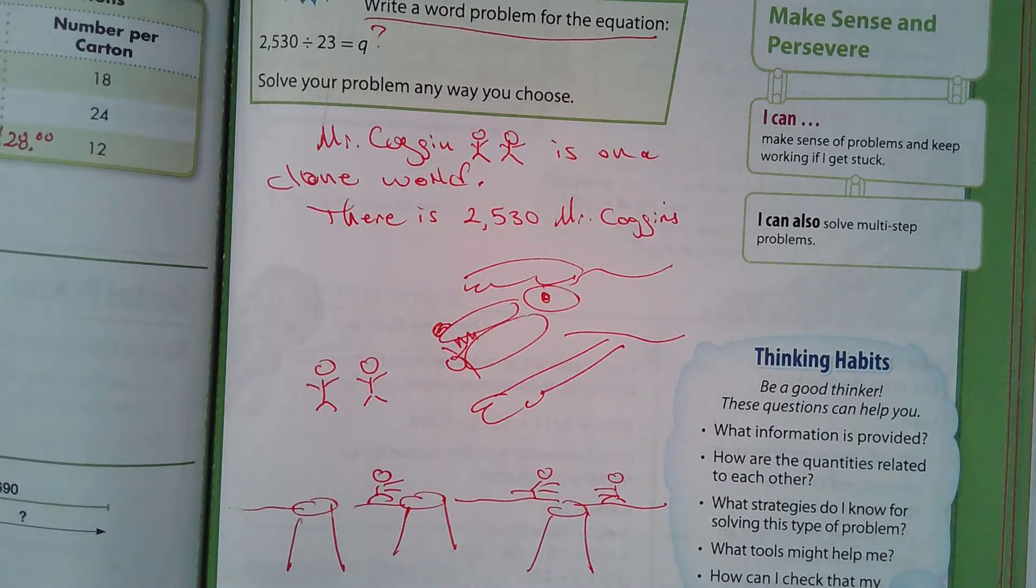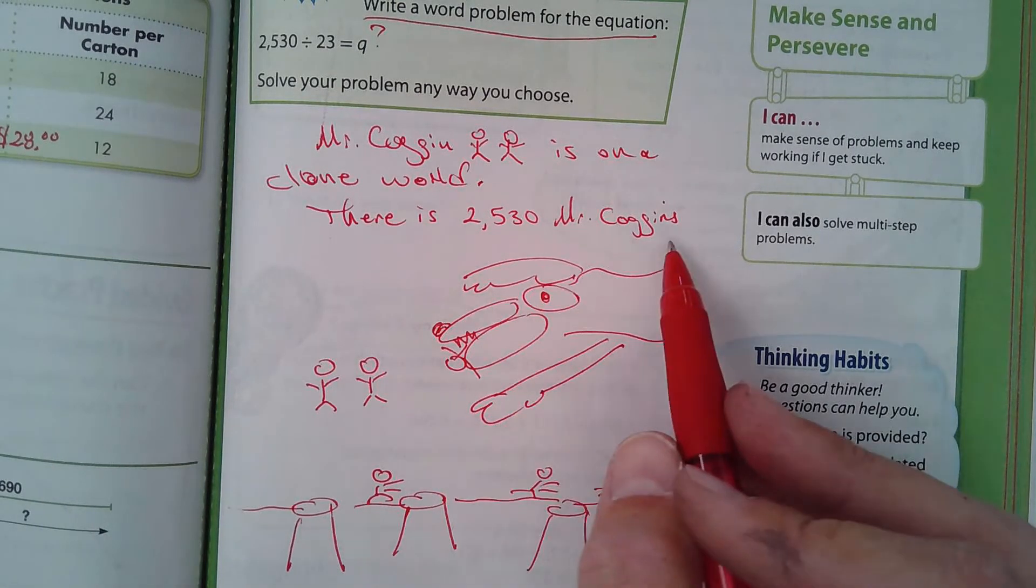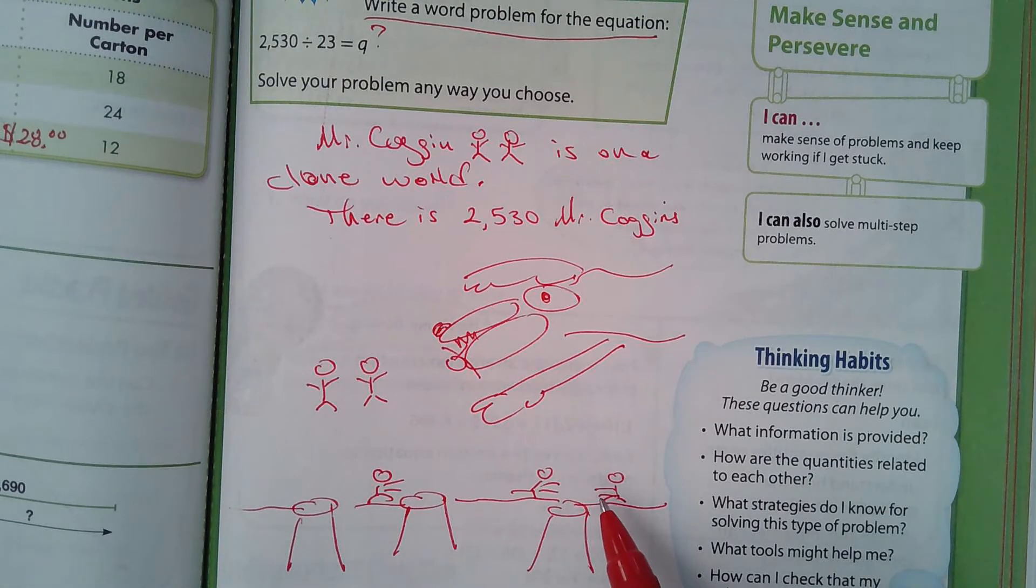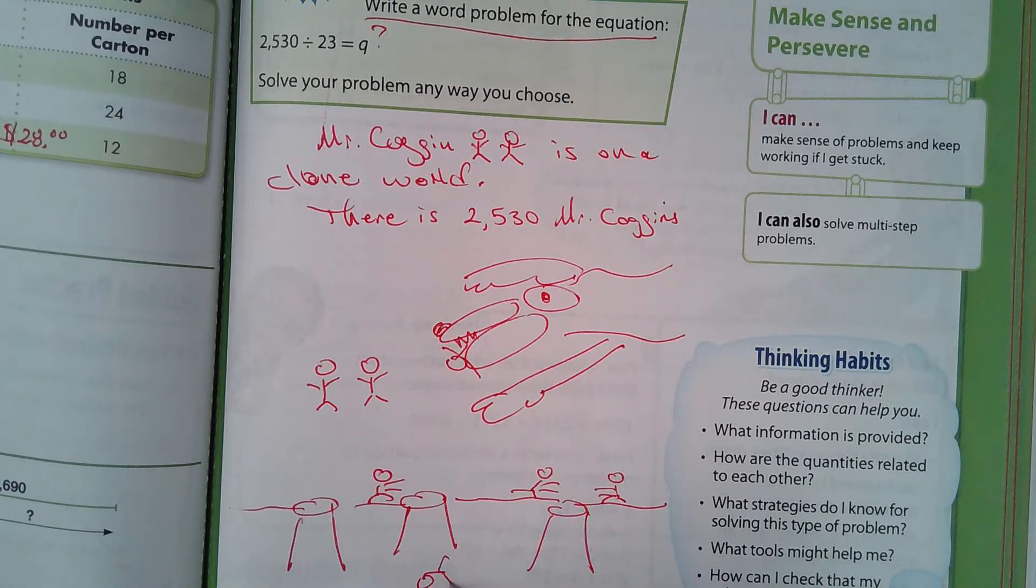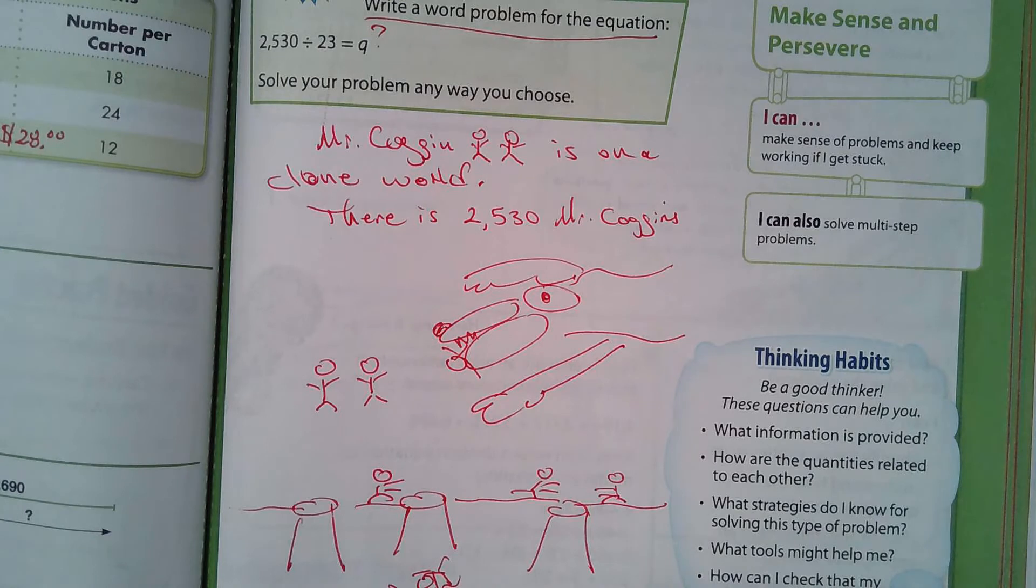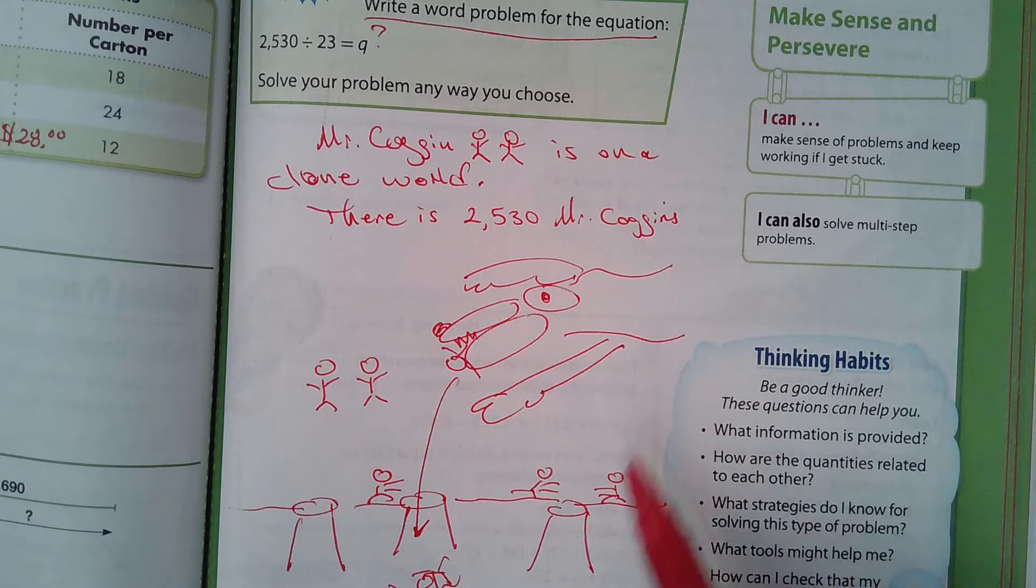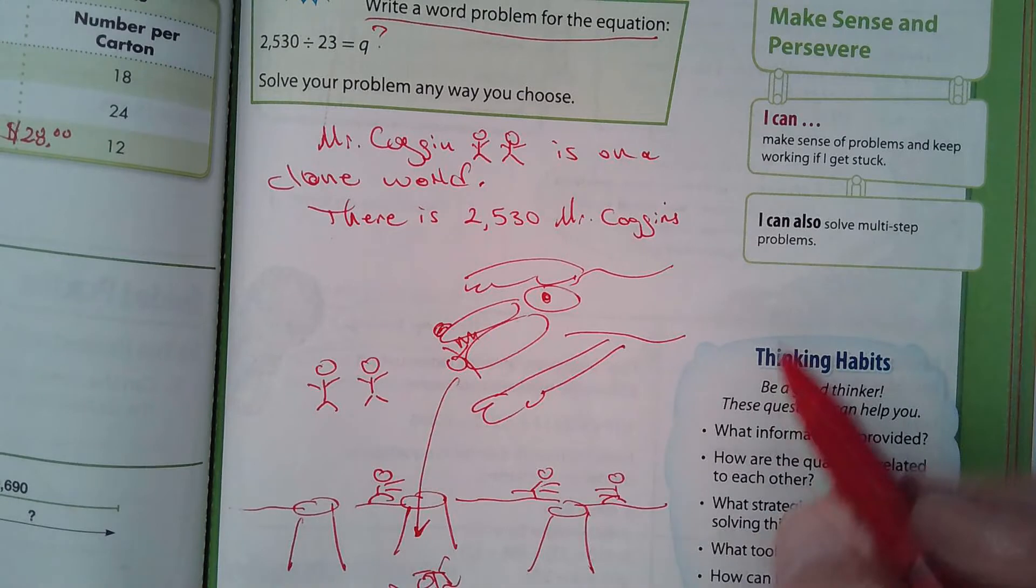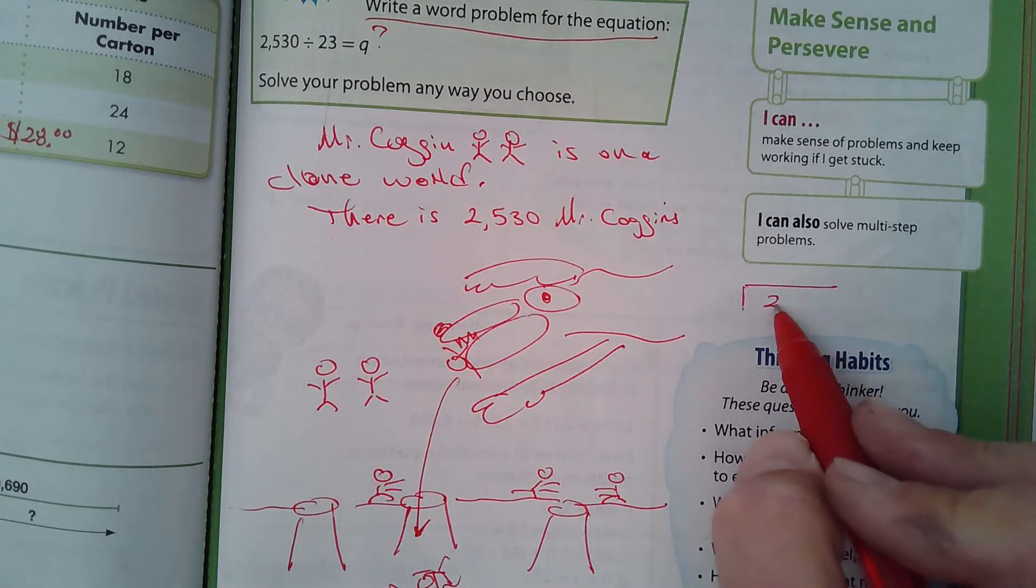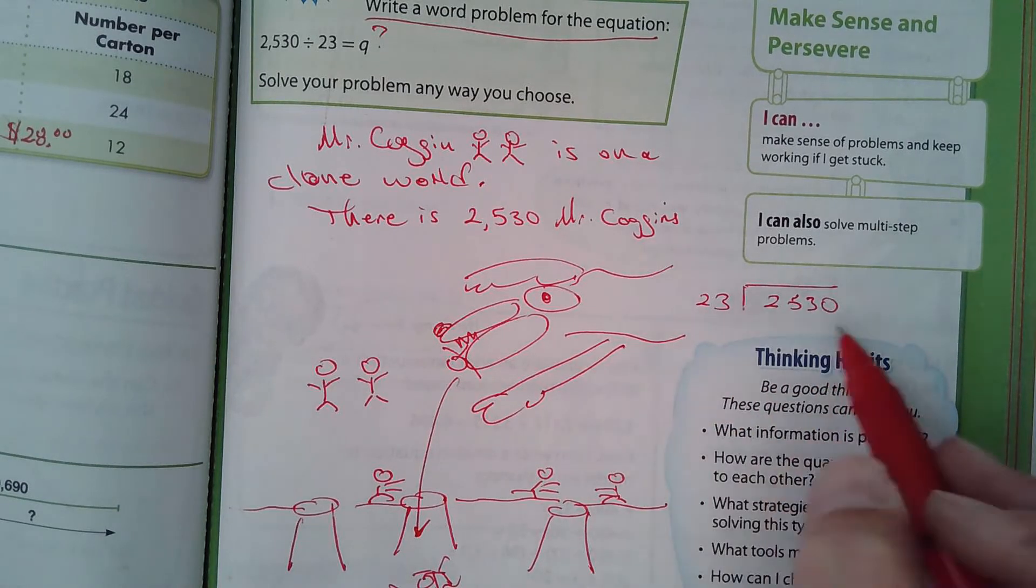All right. So the question is, if all 2,530 Mr. Coggins dove into the holes, we'll say this one got spit out and he got dropped in the hole here. So if it was an even amount, how many would make it into each hole? How many Coggins would there be in each hole? Well, it should be obvious how you would figure that out. You're just going to simply divide 2,530 Coggins by 23 holes. And that would be your answer.